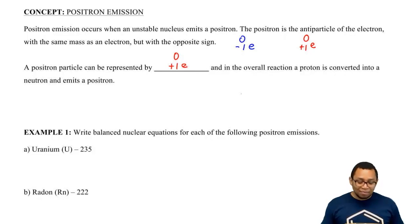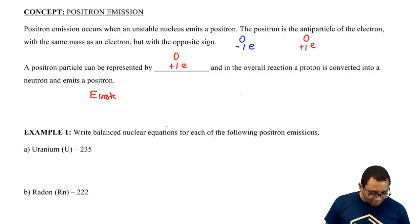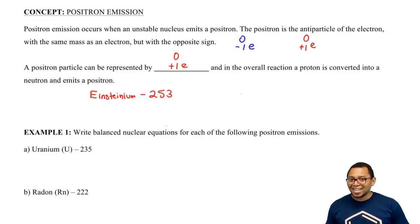So let's think of an example. Here, Einstein has his own element named after him, Einsteinium. So we'll deal with isotope 253 of Einsteinium.